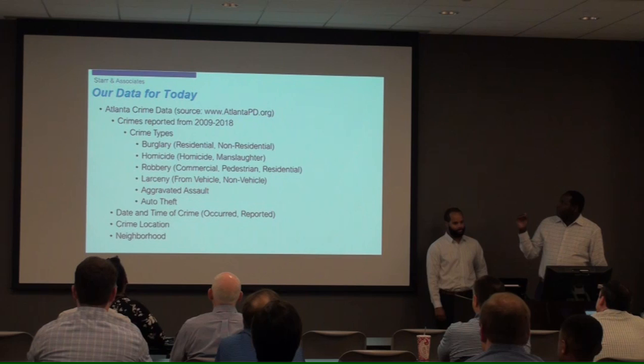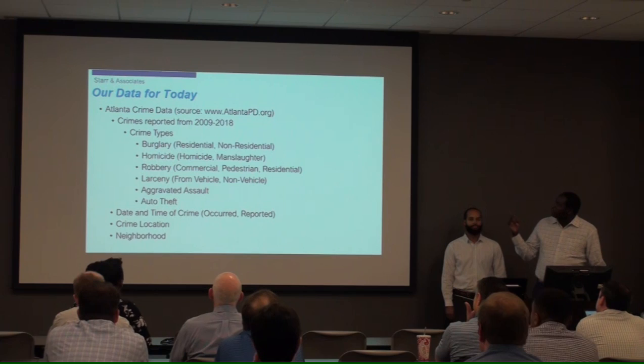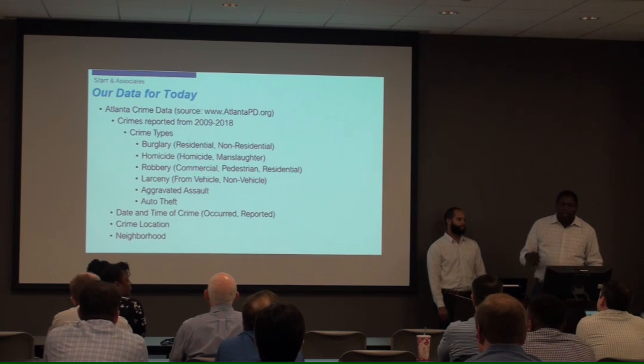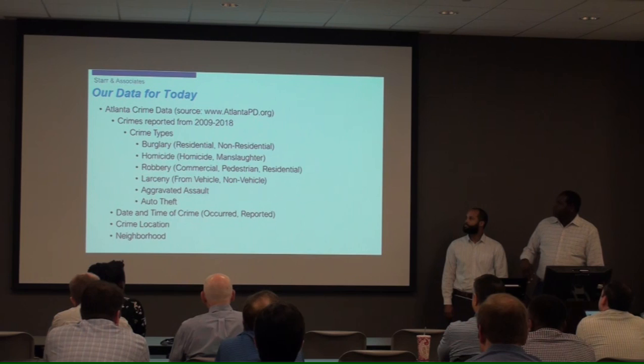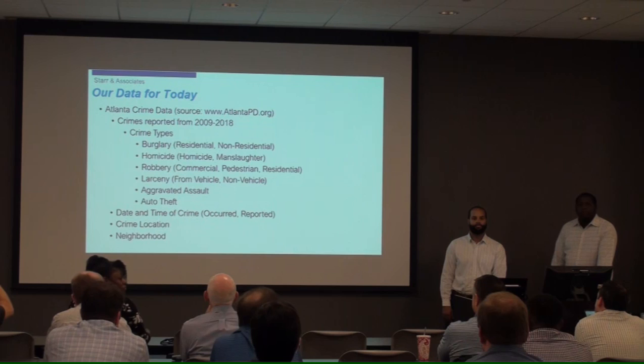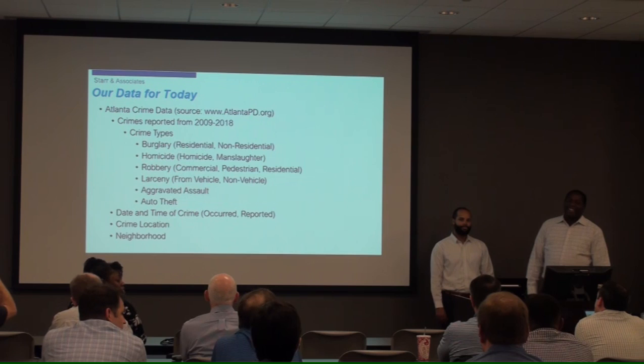We downloaded this data set — it's nine years of data. We merged some of the crime types: burglary comes in residential and non-residential, so we just merged the two together, giving us six crime categories. The data also has date and time the crime occurred, longitude and latitude, and the neighborhood and MPU. As for larceny, there's no indication of grand versus petit — it's all larceny.